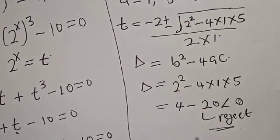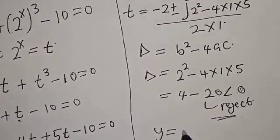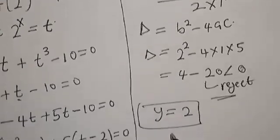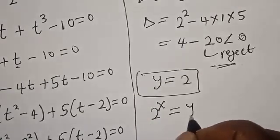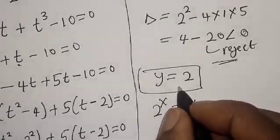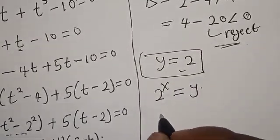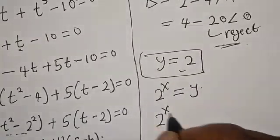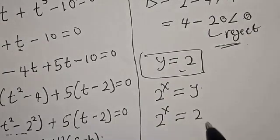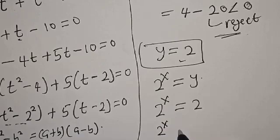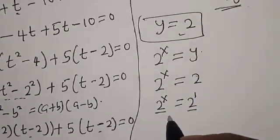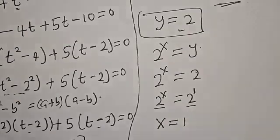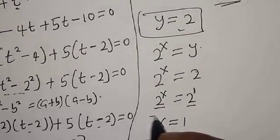Therefore the real solution is t equals 2. But remember that 2 raised to power x is equal to t, and t is equal to 2, so 2 raised to power x is equal to 2. Since 2 is the same as 2 raised to power 1, and they have the same base, x is equal to 1. That is the real value of x that we are looking for.